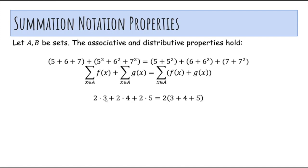You can also factor out a constant from each term in the sum, so if you have the summation over x and a of some constant times some value function of x, you can just pull the constant out if it's present in all terms in the sum.